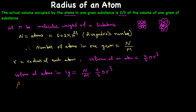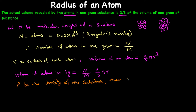Now let's introduce another parameter: let ρ (rho) be the density of the substance. Then we can find the volume of one gram of the substance. The volume V of one gram of the substance equals 1/ρ, since volume equals mass divided by density, and mass is one gram.